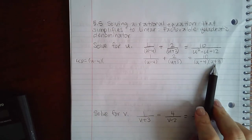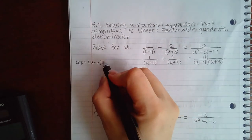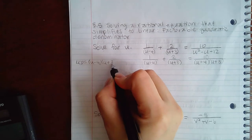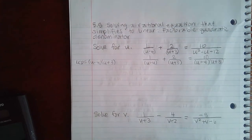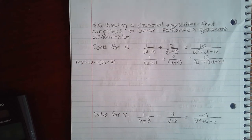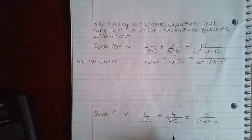I also noticed that the second fraction and the third fraction are going to have something in common, which is u plus 3. There's nothing really different other than u minus 4 and u plus 3, so this is going to be my complete LCD.